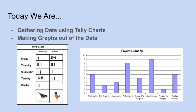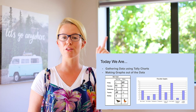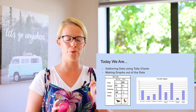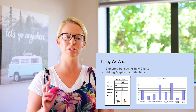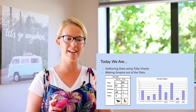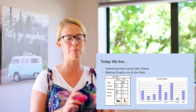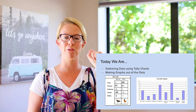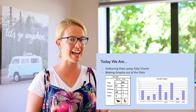Up on the screen I've got some examples of what we are doing today. First of all, we've got a tally chart. You can see it's got two birds and some little lines — those are tallies, and that is how we gather or collect data. This tally chart is called a bird count. It goes through Monday to Friday, showing how many sparrows and how many robins were seen each day. They put a line for each sparrow or robin they saw — those are their tallies.